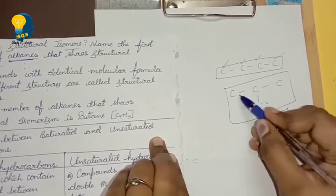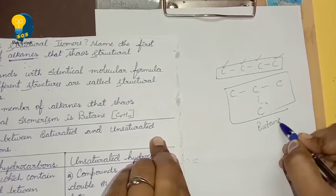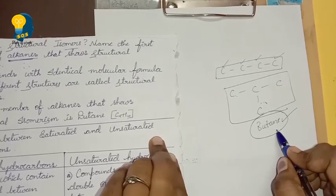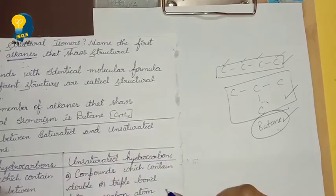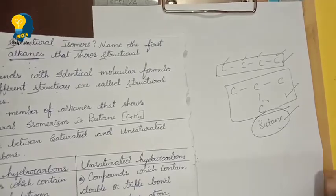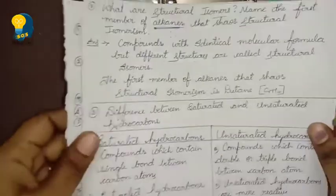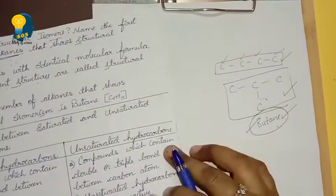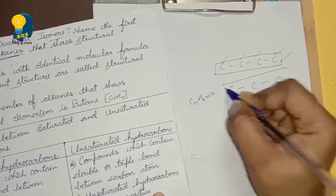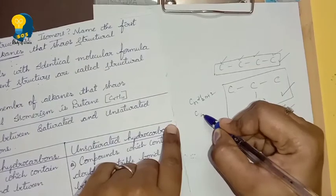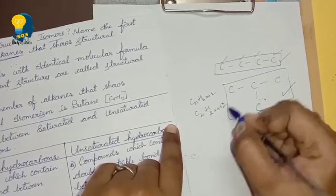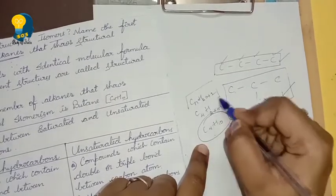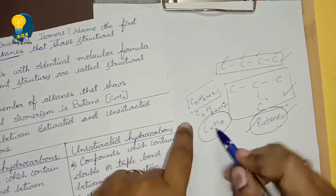So butane has 4 carbon atoms. The general formula for alkane is CnH2n+2. So for butane, n = 4. Substituting: C4H(2×4+2) = C4H10. So C4H10 is the molecular formula of butane. Butane is the first member of alkane which shows structural isomerism. You should also know the general formulas for alkane, alkene, and alkyne.